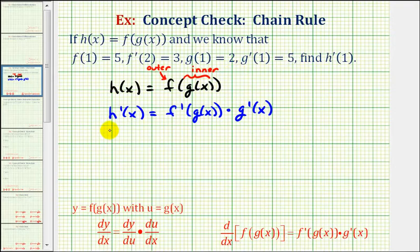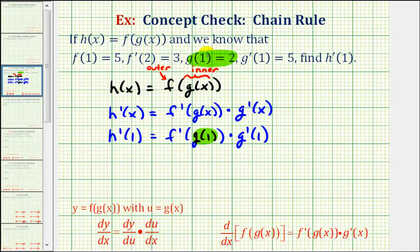So now if we want h prime of one, we'll substitute one for x, and then determine this derivative function value. Starting with the composite function, notice that g of one is equal to positive two, so we have f prime of two times g prime of one.